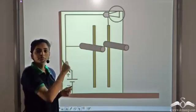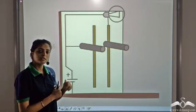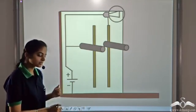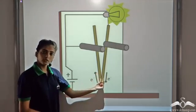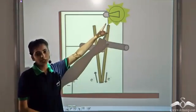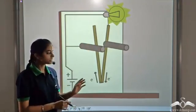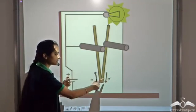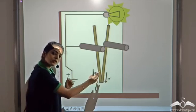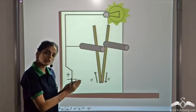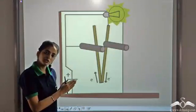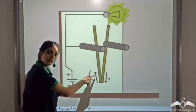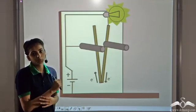Right now we see that the bulb does not glow, that means the circuit is not complete. If we join the two metal rods, you see that the bulb glows. This is because as the positive and the negative metal rods are joined, there is a transfer of electrons from the negative rod containing excess of electrons to the positive rod which has a deficiency of electrons. So as the electrons flow and the circuit is complete, the bulb glows.